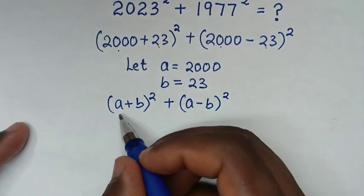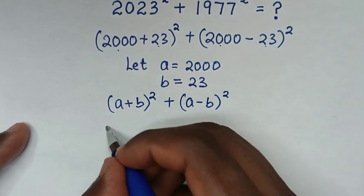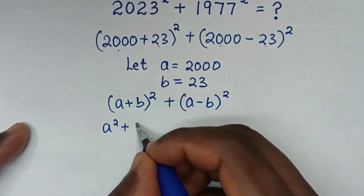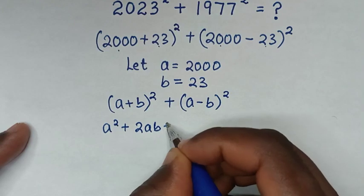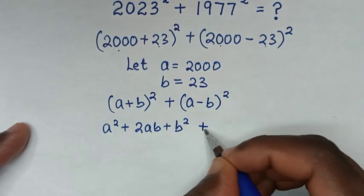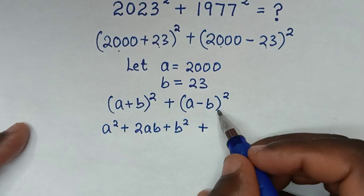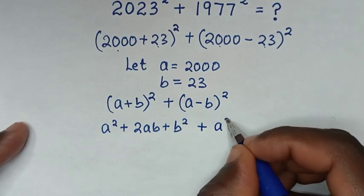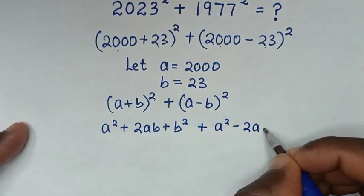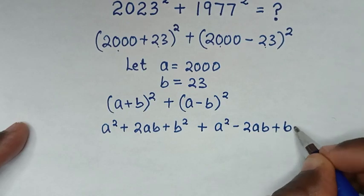Then we expand (a + b)² as a² + 2ab + b². Plus, we expand (a - b)² as a² - 2ab + b².